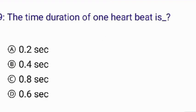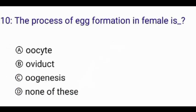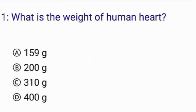The time duration of one heartbeat is — the correct answer is option C: 0.8 seconds. The process of egg formation in females is — the correct answer is option C: oogenesis.